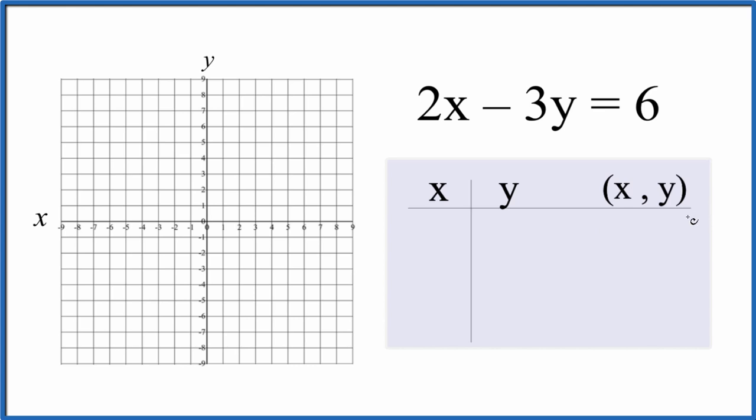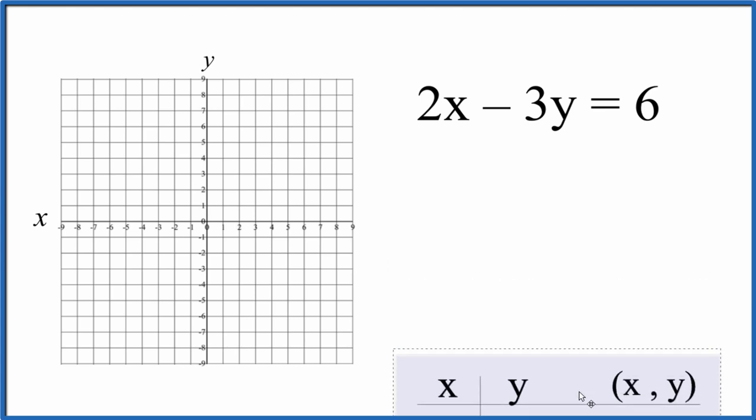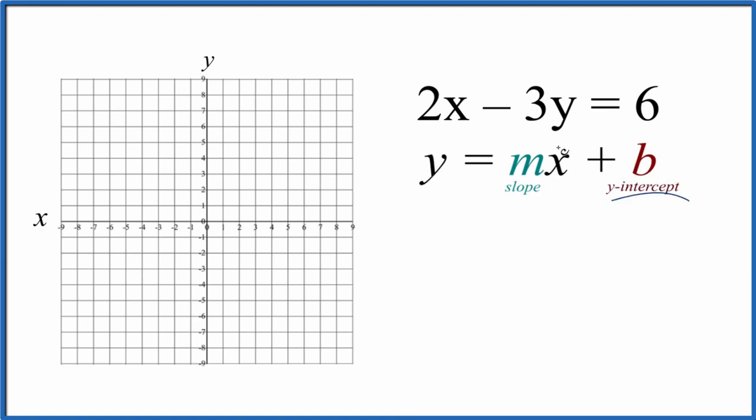Probably a better way to do this is to actually use slope-intercept formula to figure it out. That way we could find the y-intercept for 2x minus 3y equals 6 for this line, and we can find the slope as well. So let's do that.